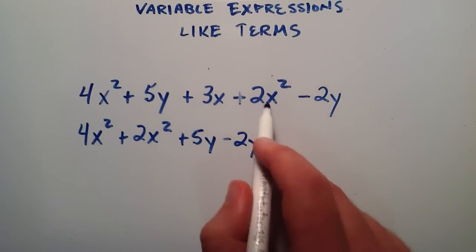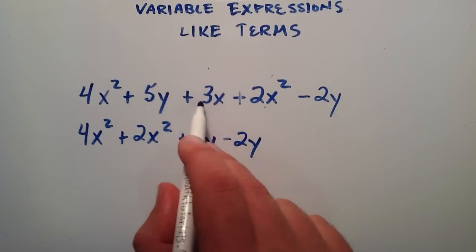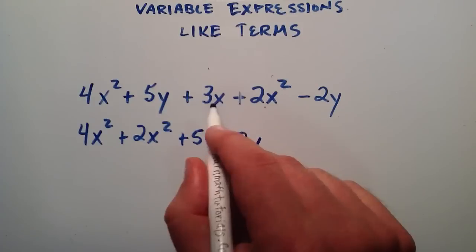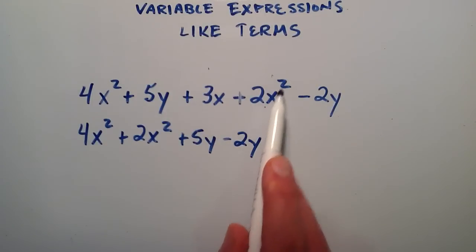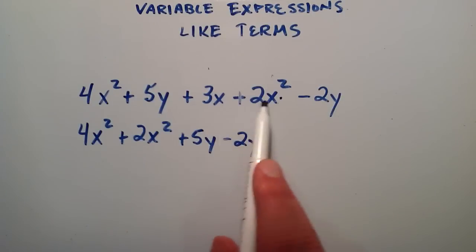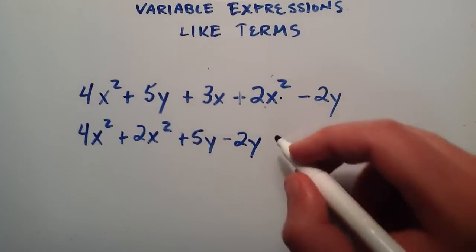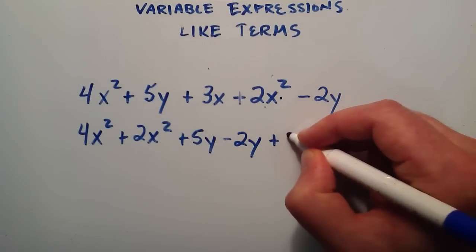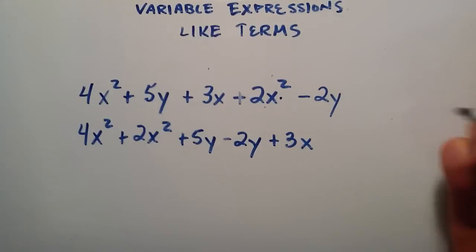And so we've taken care of these terms. We've taken care of those terms. And we're simply left with this one left right here. And we have a 3x. Covering up the coefficient, we'd want to match this with anything with an x. Well, we have an x squared here, but because x squared is not the exact same thing as x, these two are not like terms. And these two are not like terms. So therefore, 3x does not have any like terms in this problem. So we just write him by himself over here at the end.